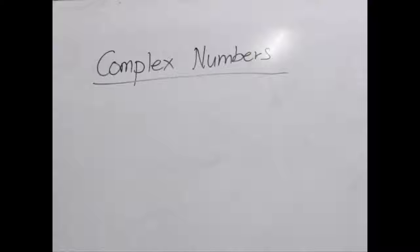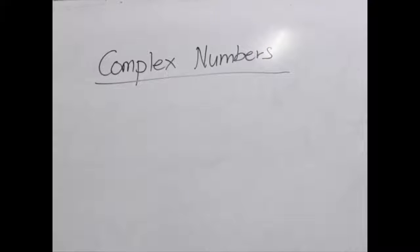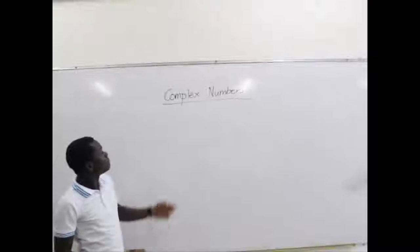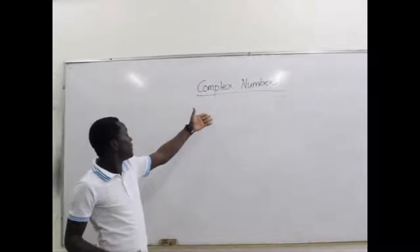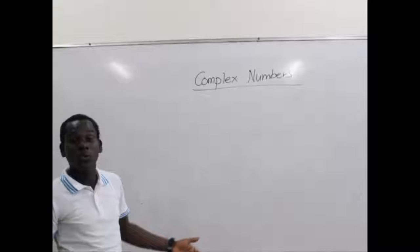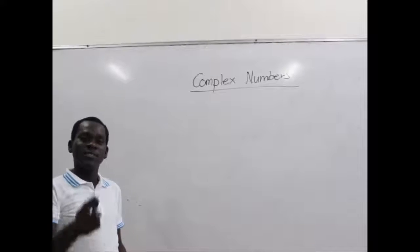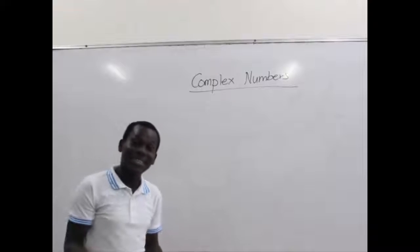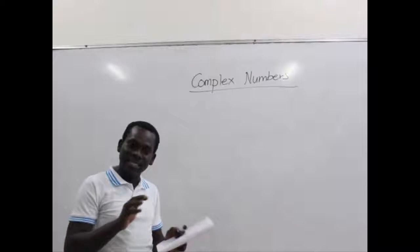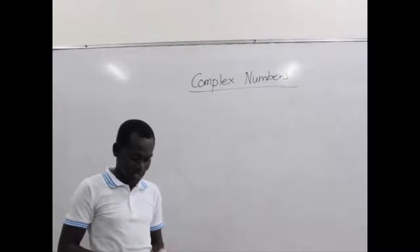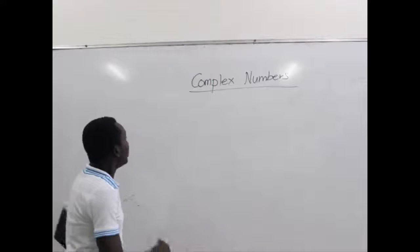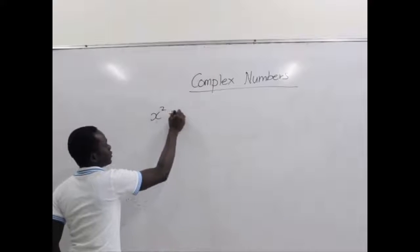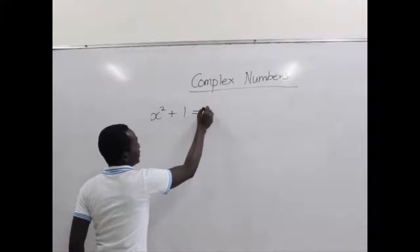Complex numbers. Now, how did we even get what we call complex numbers? One day, a mathematician was solving a simple quadratic equation, which was in the form x squared plus 1 equals 0.